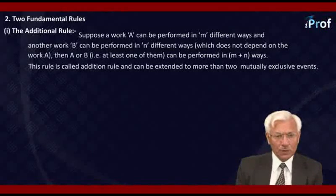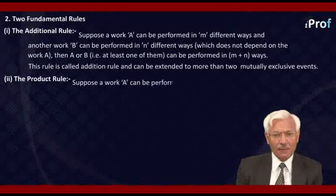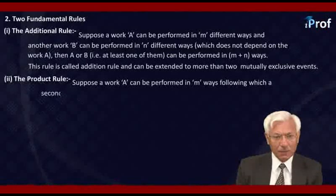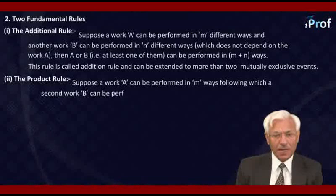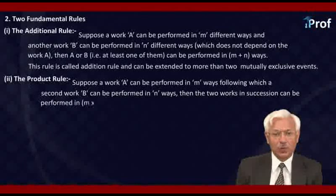The second rule is called product rule. Suppose a work A can be performed in m ways, following which a second work B can be performed in n ways. Then the two works in succession can be performed in m×n ways.